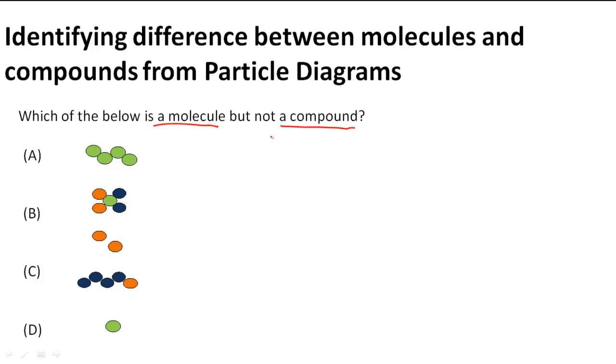So we have to be very careful about this one because it says a molecule but not a compound. Remember that compounds are two or more different elements. So they have to be different elements to be considered a compound. However, a molecule can be two or more of the same element.